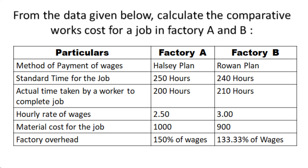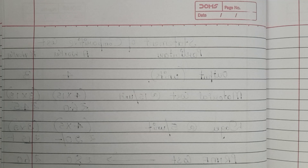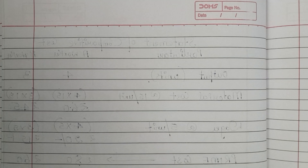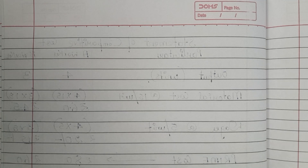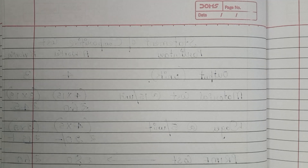Material cost for the job — whatever materials they have used — for factory A it is 1000 and for factory B it is 900. Factory overhead is calculated at 150 percent of wages in factory A and 133.33 percent of wages in factory B.